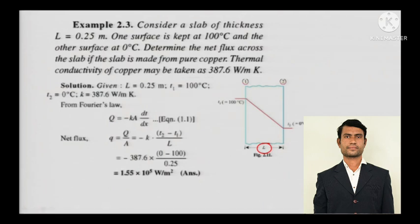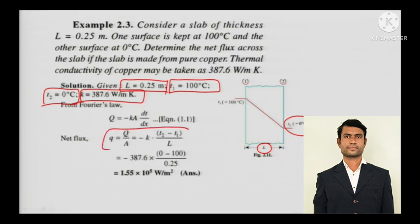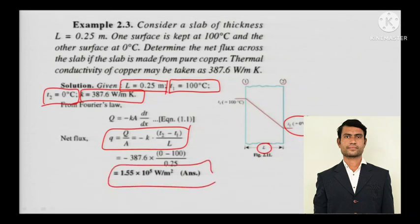Everything is given here once again. The thickness L = 0.25 meters. T1 = 100 degree Celsius and T2 = 0 degree Celsius. The thermal conductivity K = 387.6 watts per meter Kelvin. Applying simple Fourier's law: Q = minus K A dT by dx. Net flux is Q by A, so it is watts per meter square — a simple calculation.